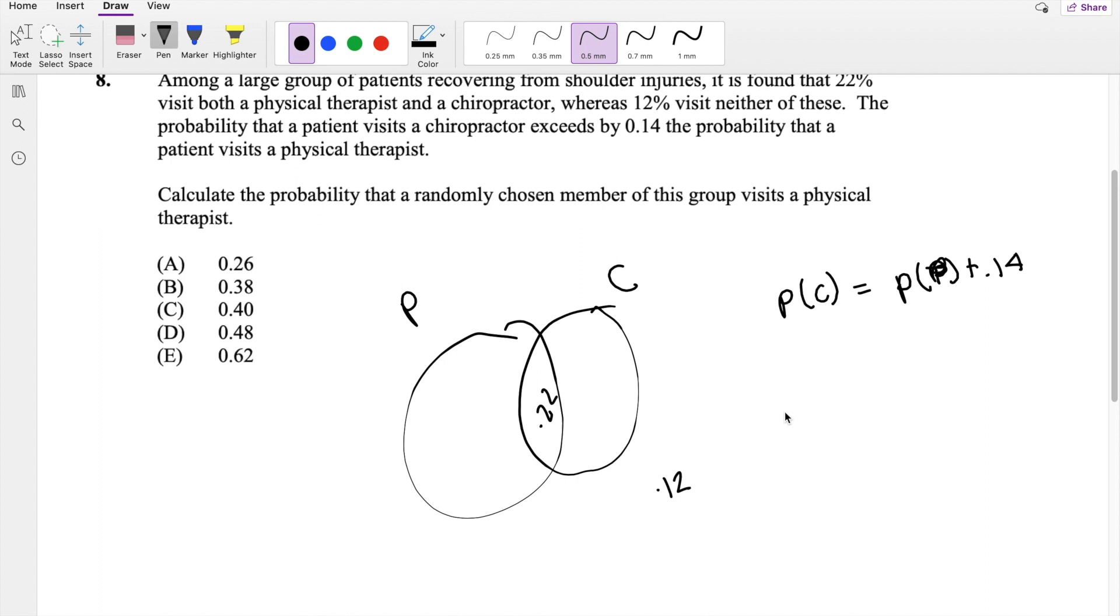And then calculate the probability that a randomly chosen member of this group visits a physical therapist. Okay, so for this whole thing, we know all probability has to add up to 1. And if the outside is 0.12, you know that the probability of P union C is going to be 1 minus 0.12, which is equal to 0.88.